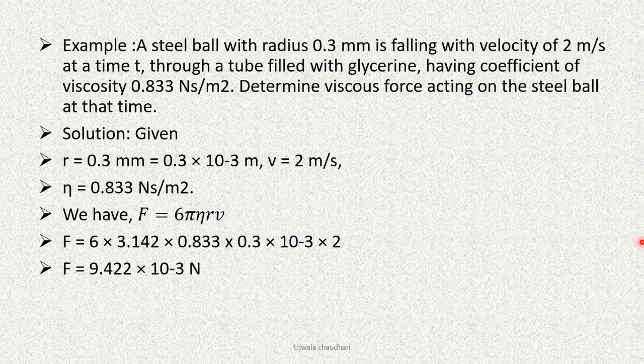Solution: Given r = 0.3 mm = 0.3 × 10⁻³ m, v = 2 m/s, η = 0.833 Ns/m². We have F = 6πηrv. Putting all values in that equation, F = 6 × 3.142 × 0.833 × 0.3 × 10⁻³ × 2. F = 9.422 × 10⁻³ N.